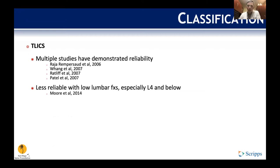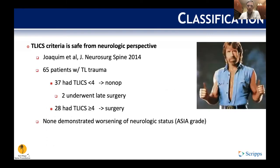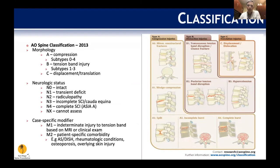Multiple authors have shown TLICS is a reliable way to characterize these patients and guide treatment, though caution is needed further down the lumbar spine where it is less reliable. A 2014 study of 65 patients found no worsening of neurologic status — per ASIA grade — in patients managed according to TLICS recommendations.